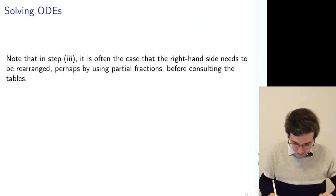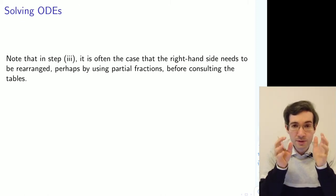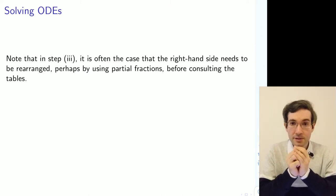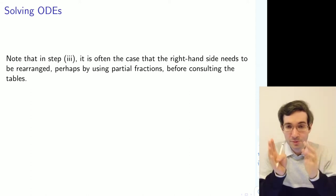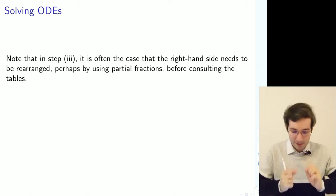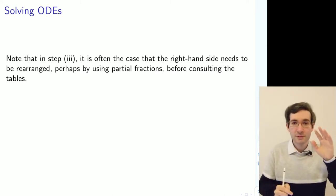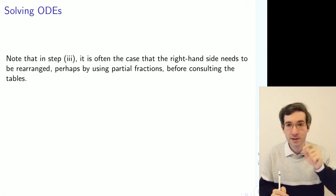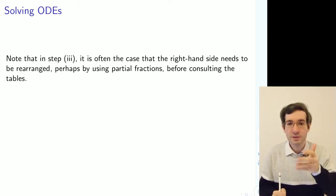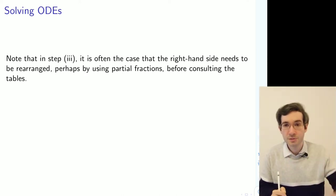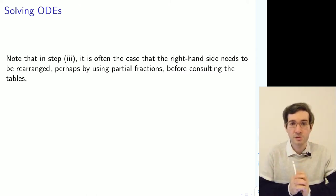Let's get started. But before that, note that step 3 is often the most challenging step. It's reasonably straightforward in many cases to go from differential to algebraic, but going back sometimes requires a little care. That is why we learned all about partial fractions and quadratic factors. Sometimes if you cannot find the inverse Laplace transform of f-bar of s directly from a table, you might need to use a partial fraction decomposition or complete the square in a quadratic factor in the denominator.